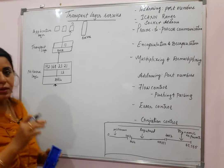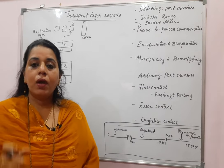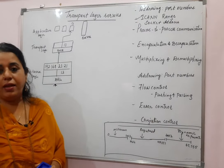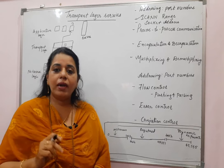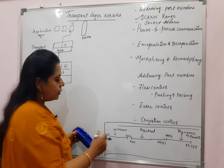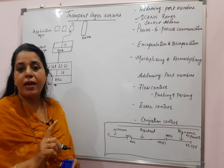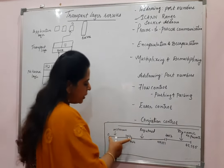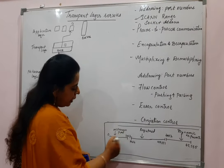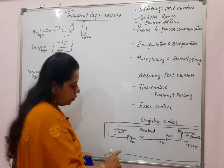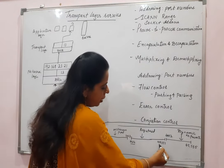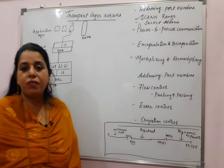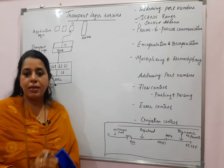As I said, every process is identified by a port number. This port number is selected from the ICANN range — ICANN stands for Internet Corporation for Assigned Numbers and Names. This authority has 65,536 port numbers. This complete list can be divided into three parts: well-known port numbers from 0 to 1023, registered port numbers from 1024 to 49,151, and private port numbers from 49,152 to 65,535. For now, just remember these are the different port number ranges.